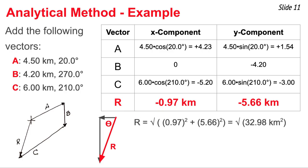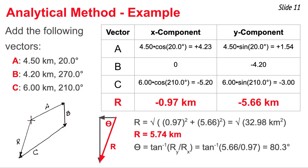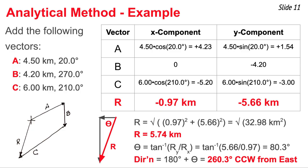I use the Pythagorean theorem — a squared plus b squared equals c squared — to find the square root of 32.98, giving 5.74 kilometers as the magnitude of the resultant. For the direction, I use the tangent function: the side opposite theta is the longer 5.66 southern side, and the side adjacent is the shorter 0.97 western side. I get 80.3 degrees for theta, so the direction is 80.3 degrees south of west. Using the counterclockwise convention, vector R is 180 plus 80.3 degrees, giving 260.3 degrees counterclockwise from east.